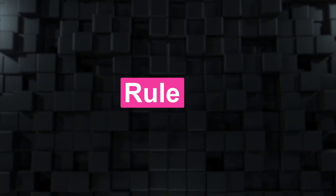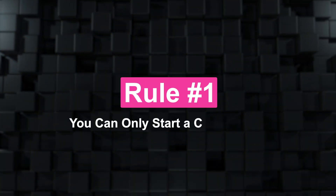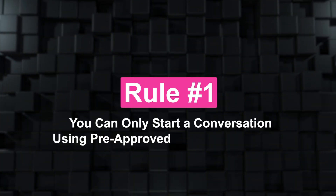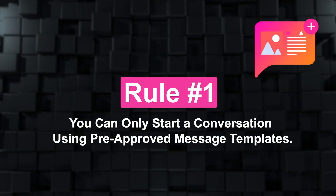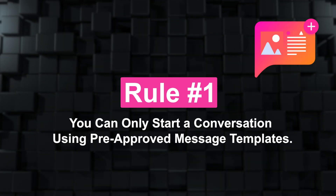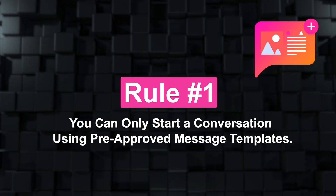But, and this is important, using the API comes with some rules from Meta. First, businesses aren't allowed to just message anyone anytime. You can only start a conversation using pre-approved message templates. Meta does this to prevent spam, which keeps WhatsApp clean and trusted by its users.